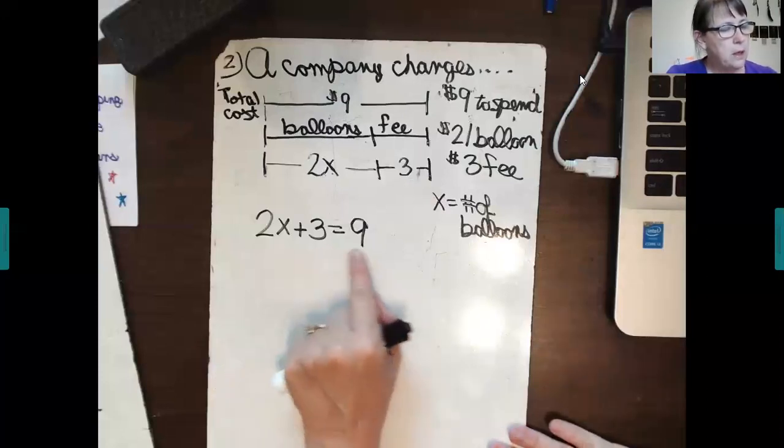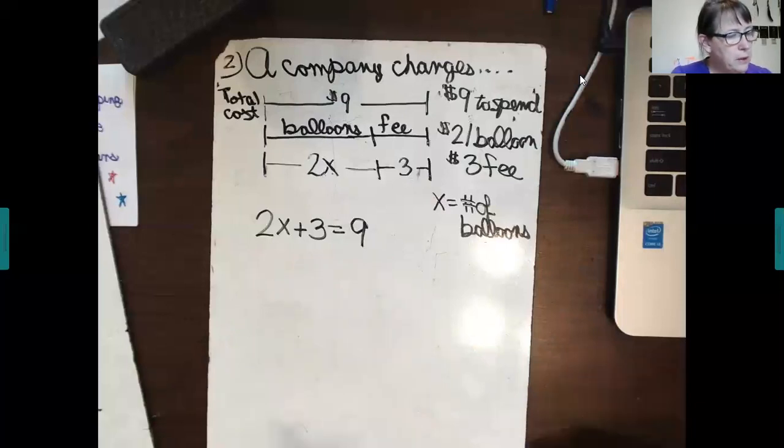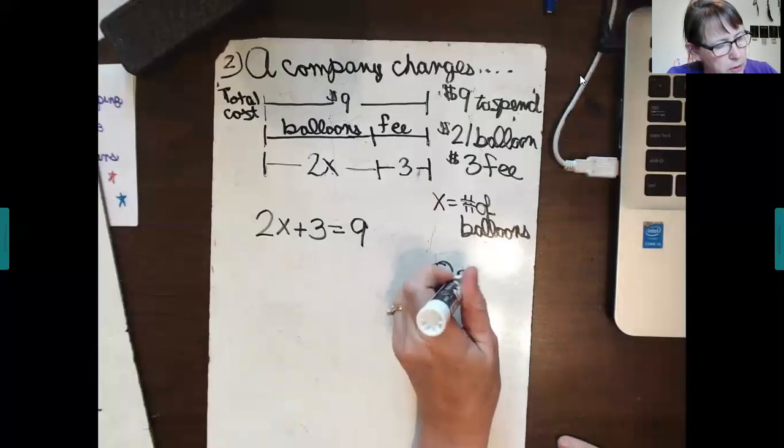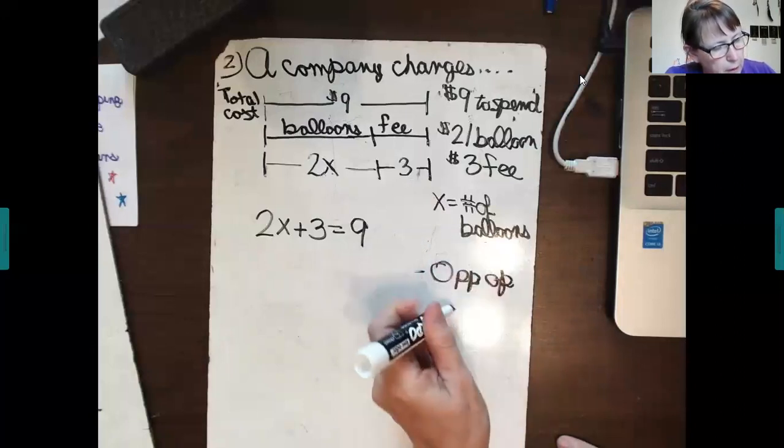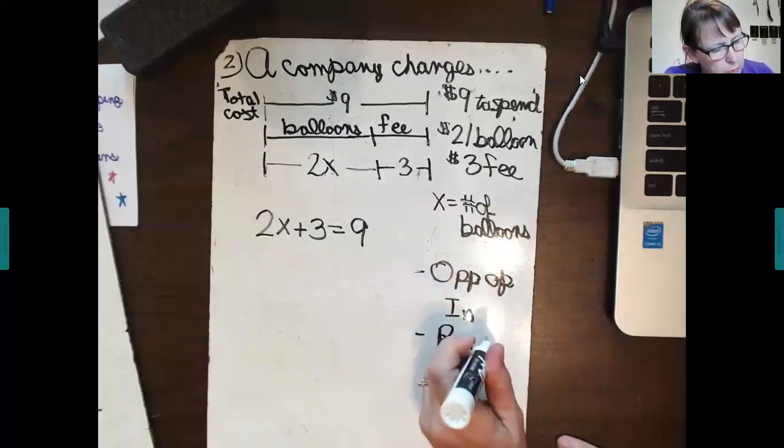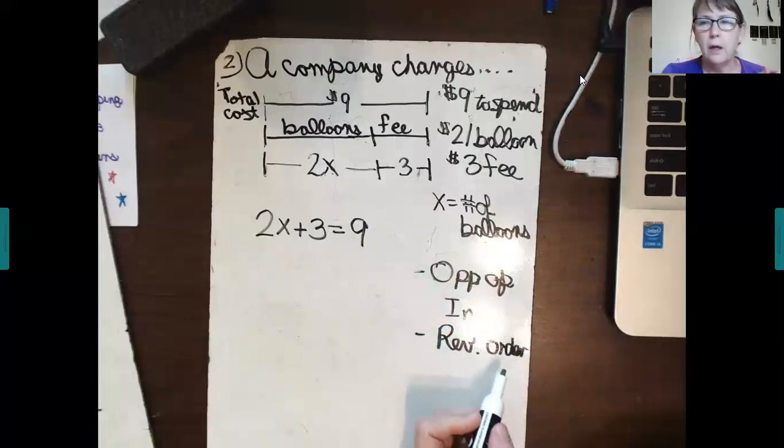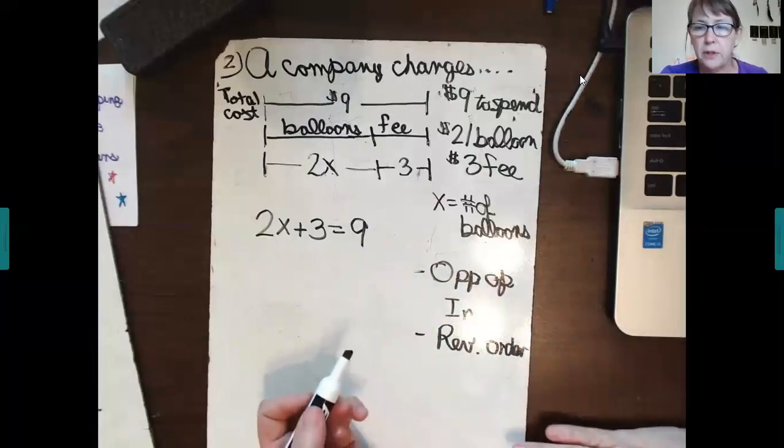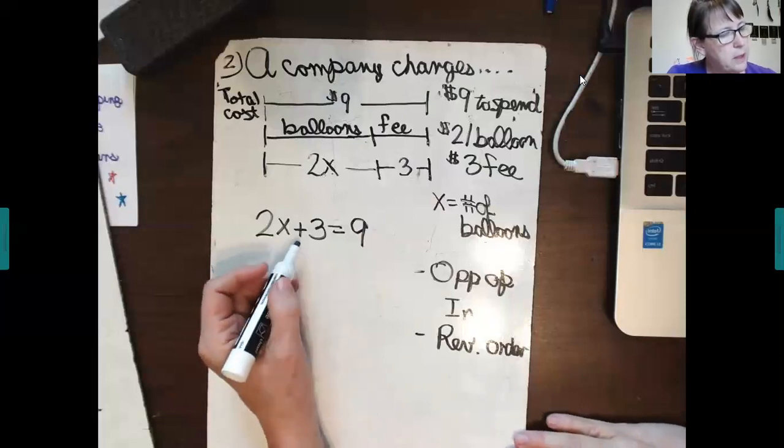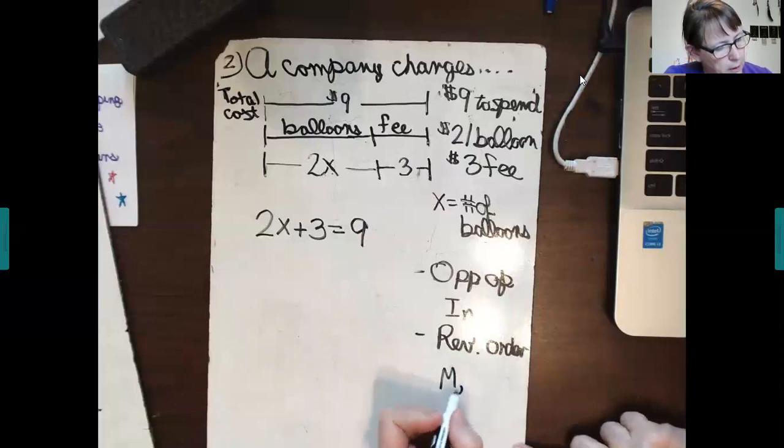And so, now we're going to take this two-step equation and solve it by completing the opposite operations in reverse order. And when I say reverse order, I'm giving a nod to, or I'm referring to, the order of operations. So, it says, order of operations says M, D, A, S. I'm looking at the tail end of it.